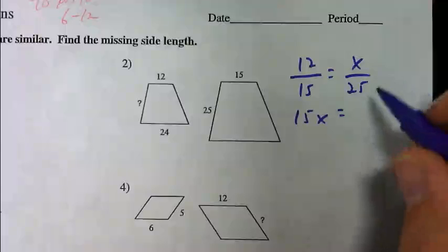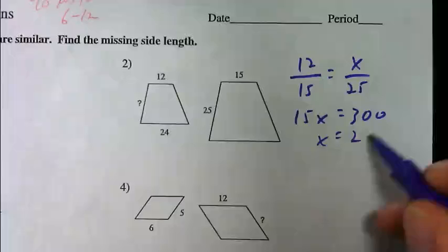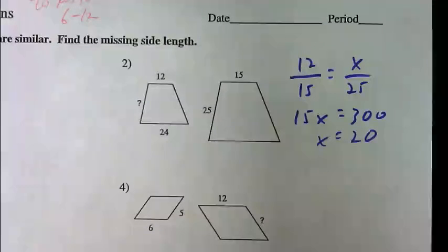We got 15 times x is 15x. 12 times 25 is 300. And then 300 divided by 15 is 20. So the numbers aren't too bad on this one to be done without a calculator either.